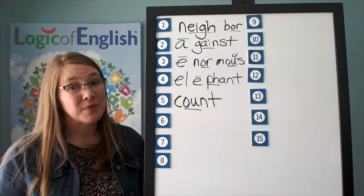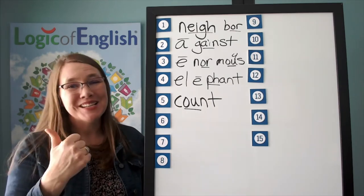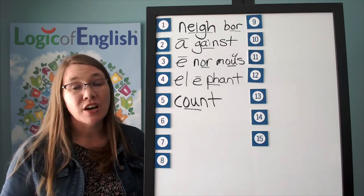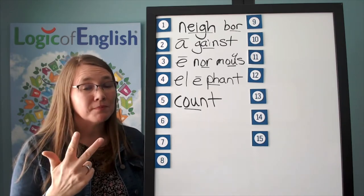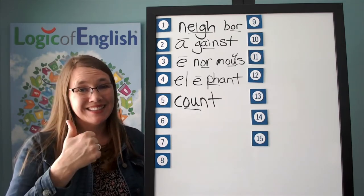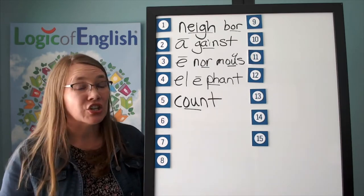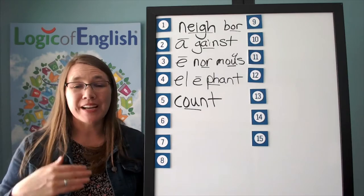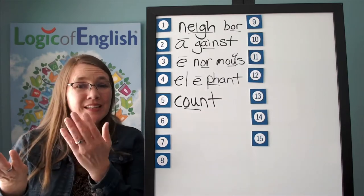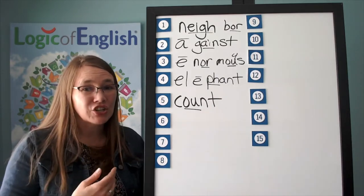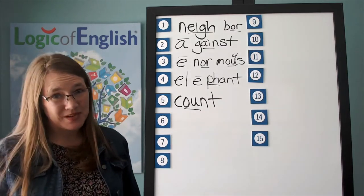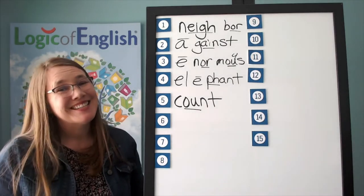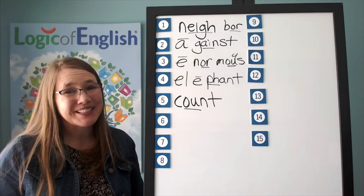Let's sound it out. Spee: S-P, use a double E. Dom: D, ah, M. E. Tur: T, ur — use the ur of her. Go ahead and write speedometer: spee, dom, e, tur. Sounding it out is absolutely key.